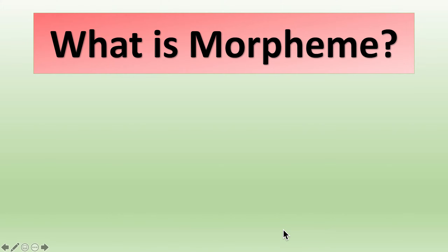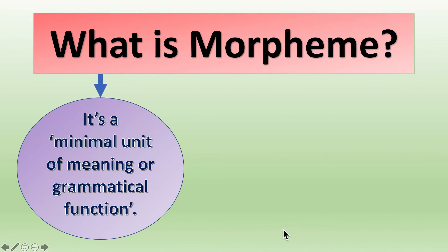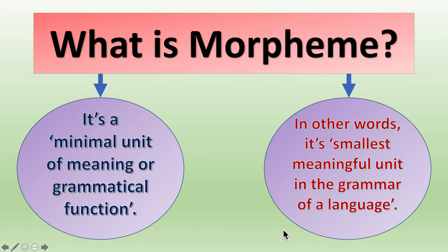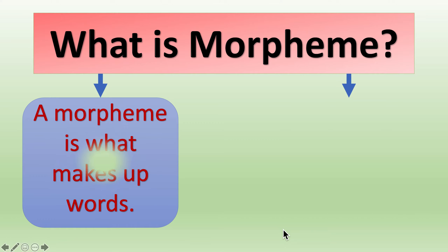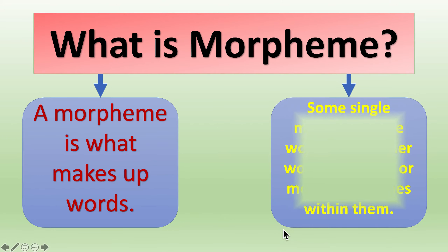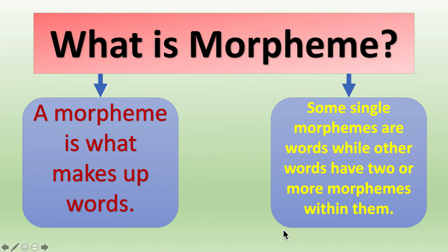What is a morpheme? It is a minimal unit of meaning or grammatical function. In other words, it is the smallest meaningful unit in the grammar of a language. A morpheme is what makes up words. Some single morphemes are words, while other words have two or more morphemes within them.